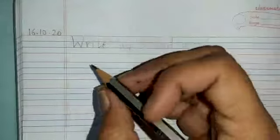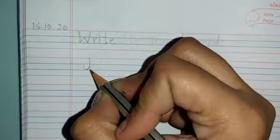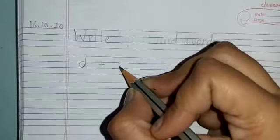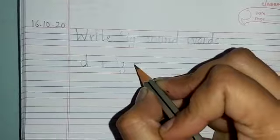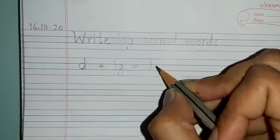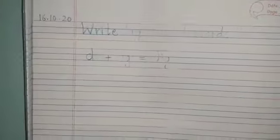The first word is dig. So, we are going to write down D, D plus IG. What word do we form? Dig. D, I, G, dig.